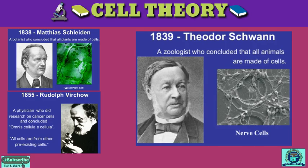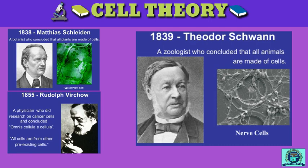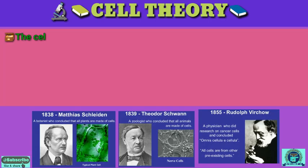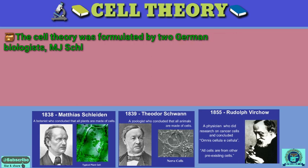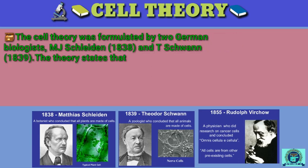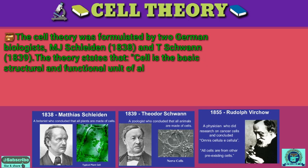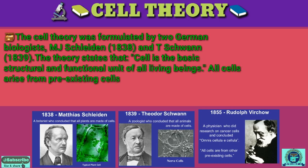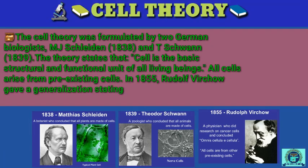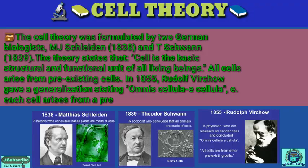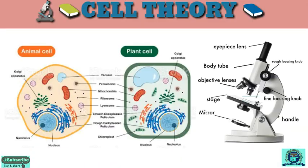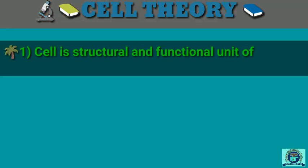Now we explain the cell theory. The cell theory was formulated by two German biologists: M.J. Schleiden and T. Schwann, between 1838 and 1839. In the context of modern research, the cell theory can be stated as follows: number one, the cell is the structural and functional unit of all living beings; number two, all living organisms are composed of cells.